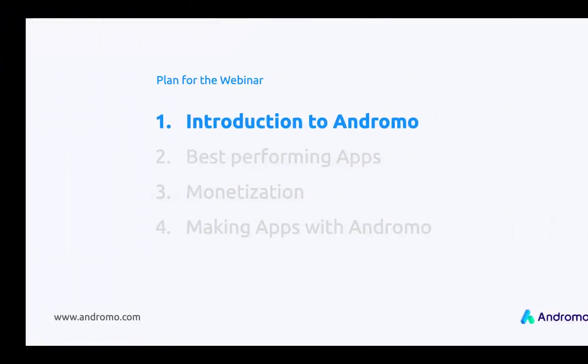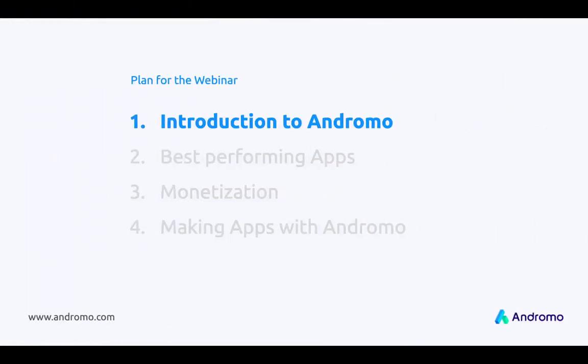So today I will tell you about three main things. First I will introduce you to Andromo and show you the main features of our platform. Then I will show you best performing apps — good apps made at Andromo in Google Play. We will take a brief look at them directly in the marketplace and see how they look, how many downloads they have, and you will be able to make your own research on them later.